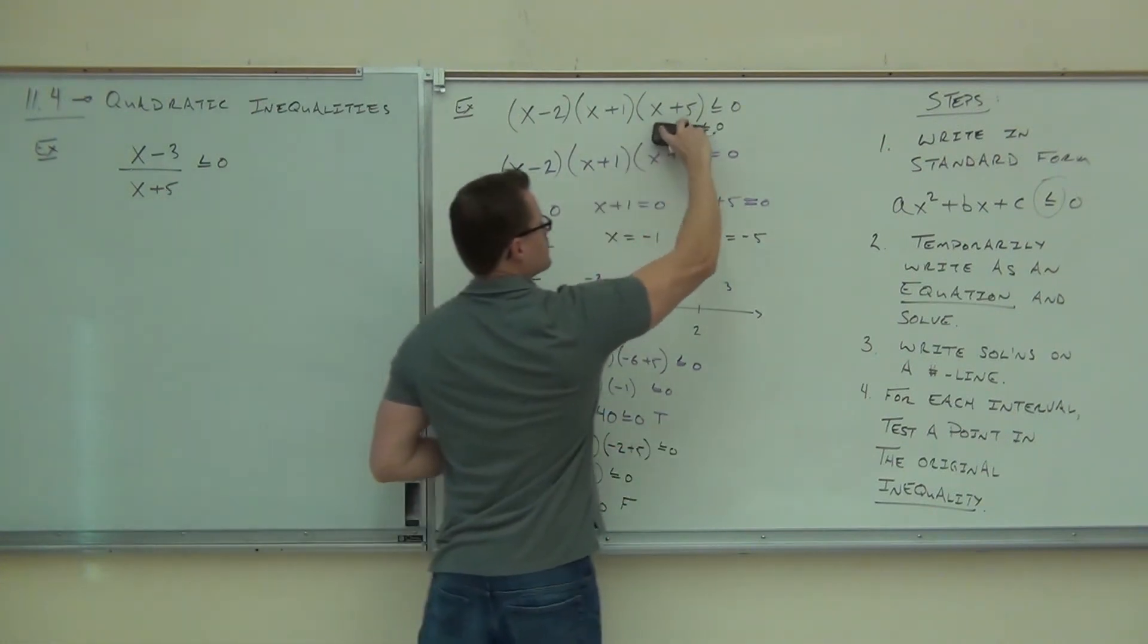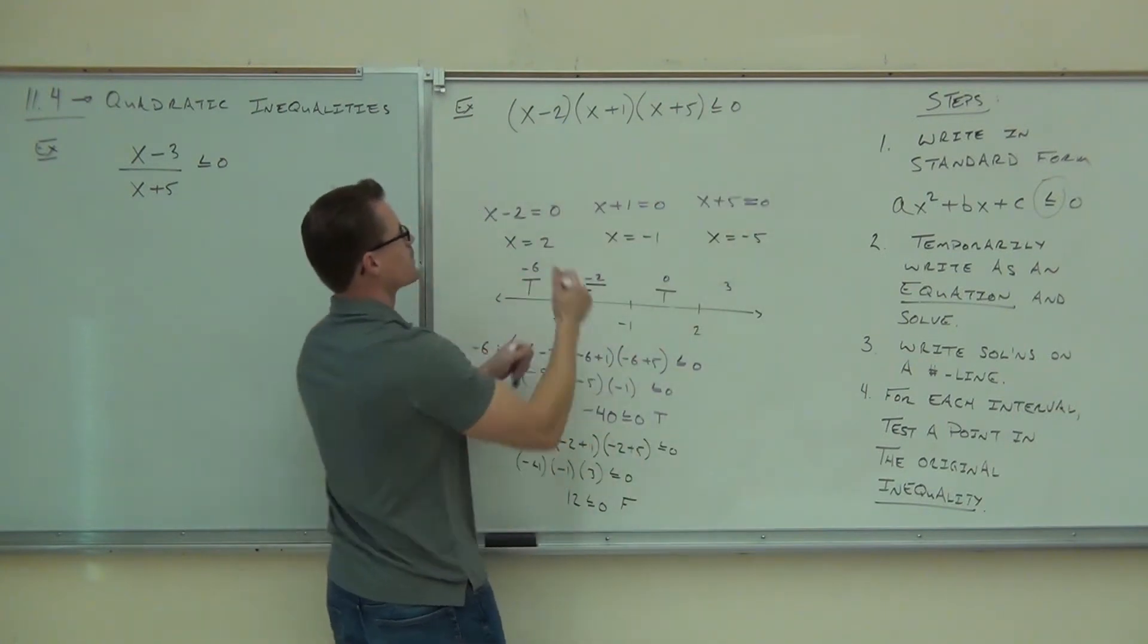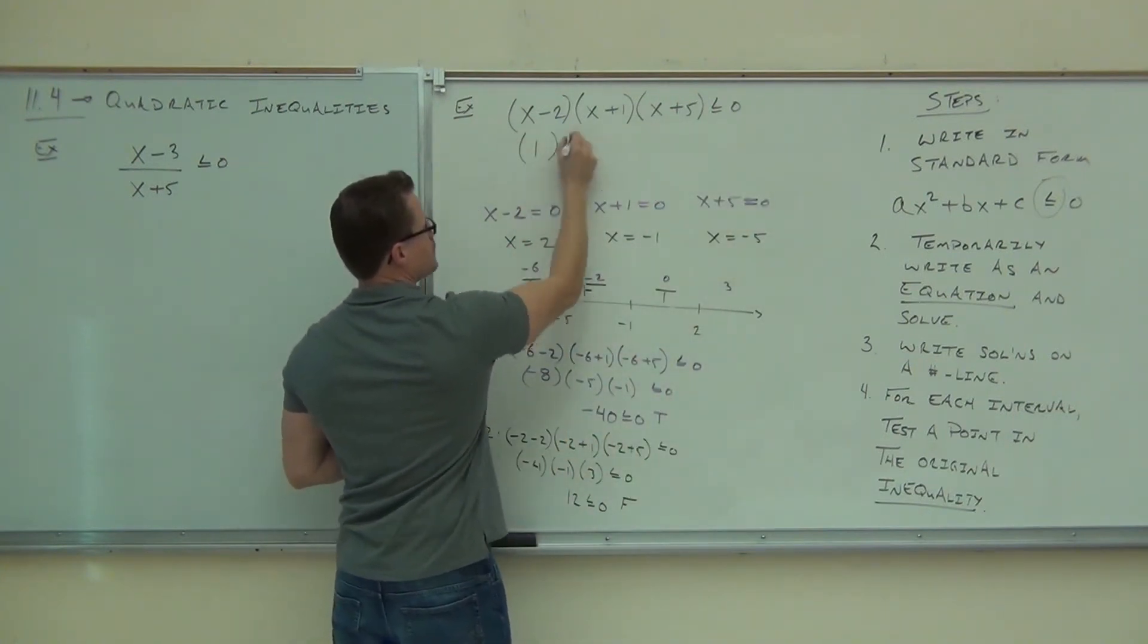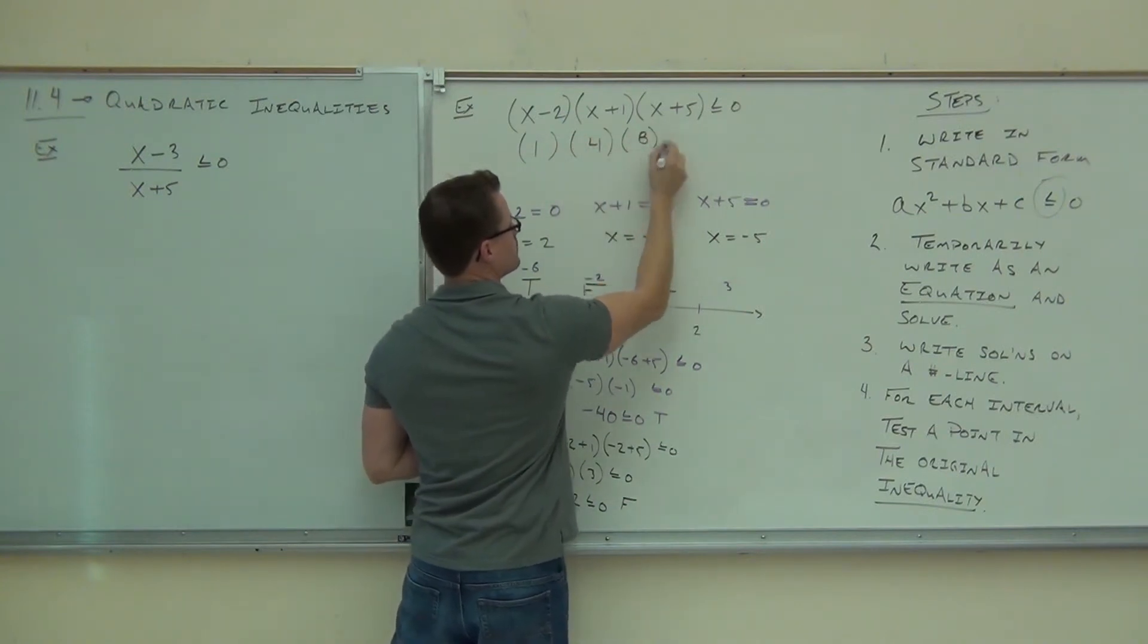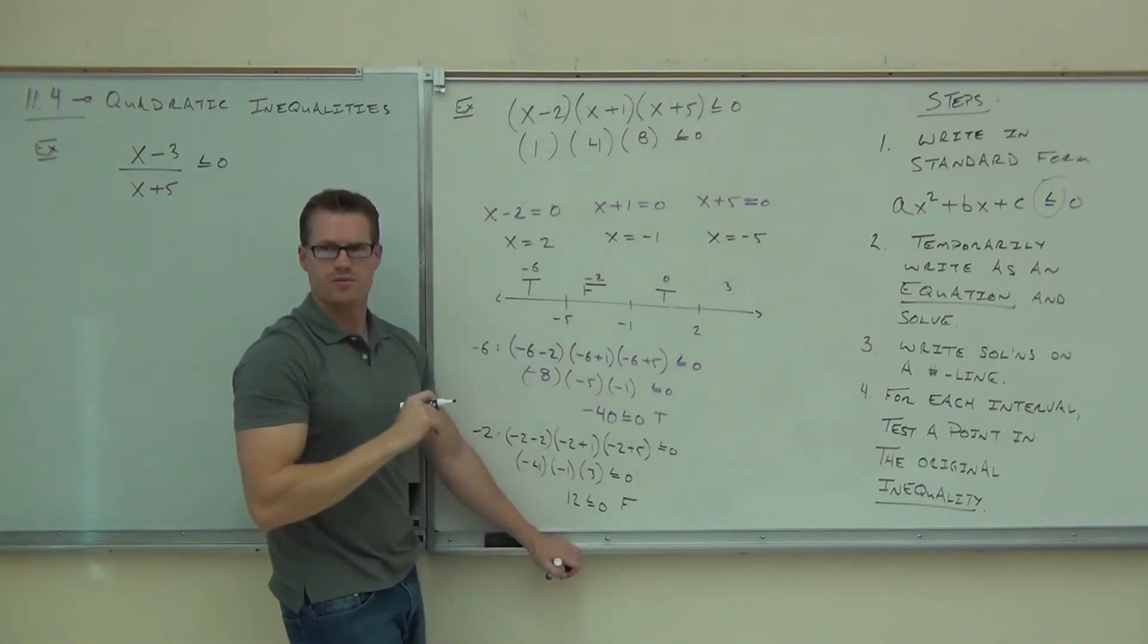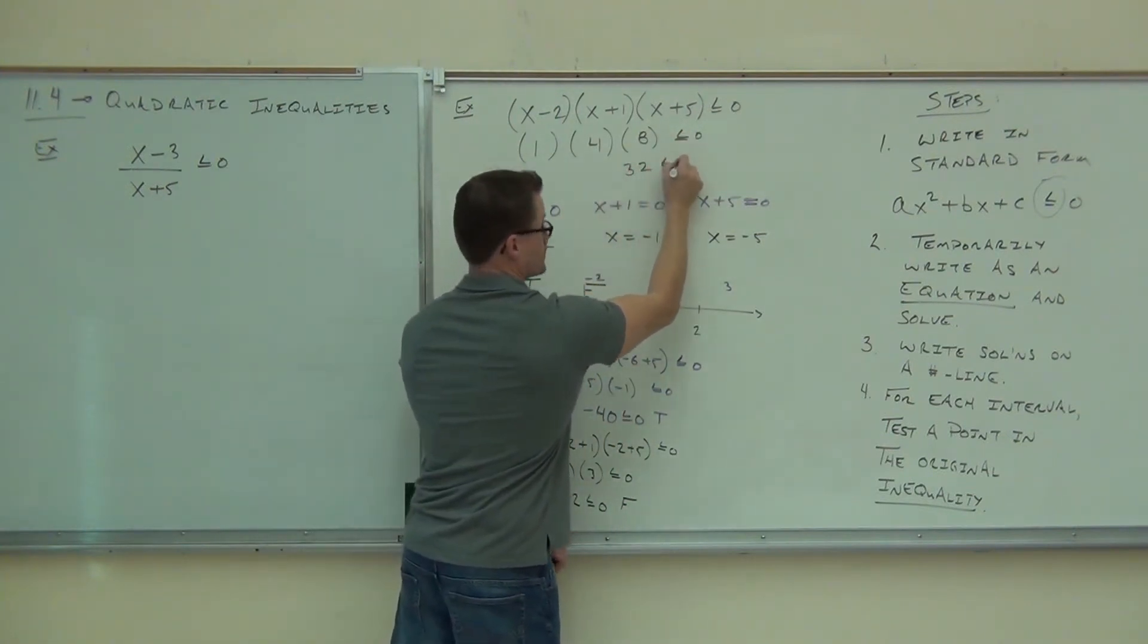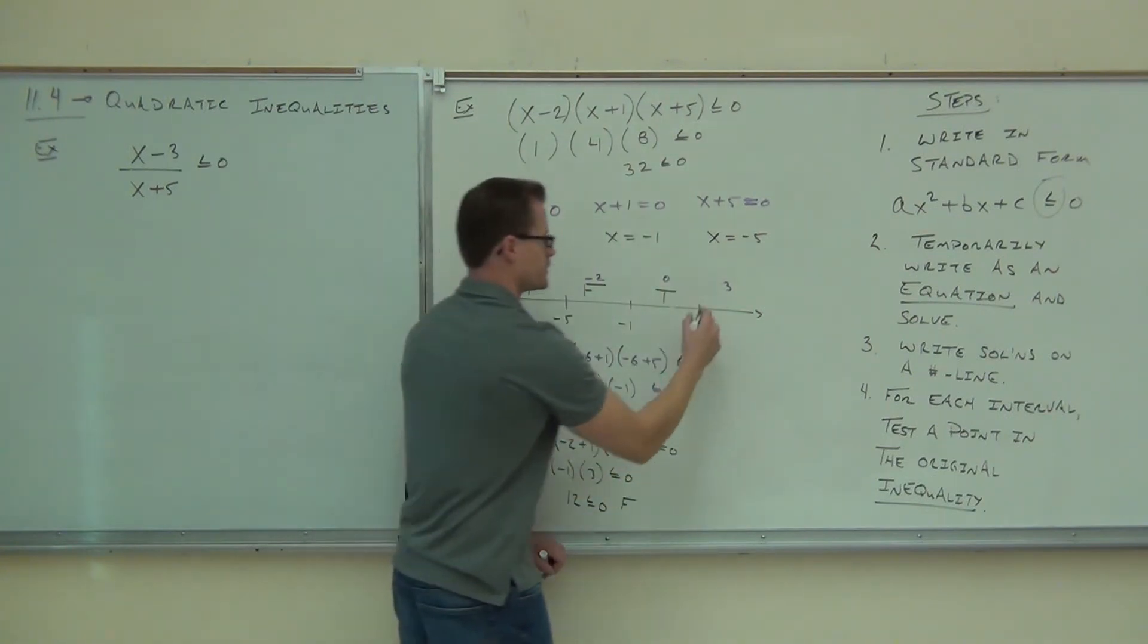And lastly, we'd have 3. If you check 3, you'll get 1 times 4 times 8. You see where the 1 times 4 times 8 is coming from? You're going to get 32. It's positive 32. Is positive 32 less than or equal to 0? No. That's false.